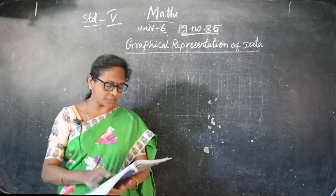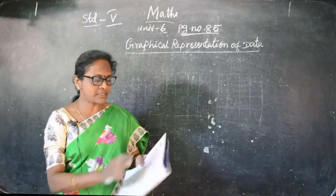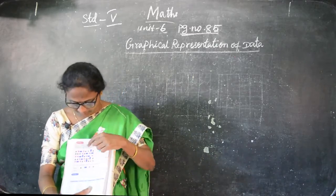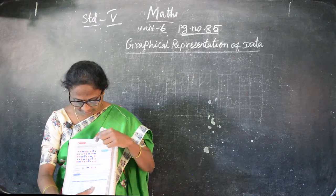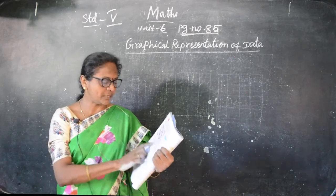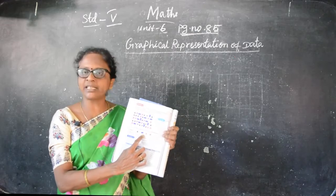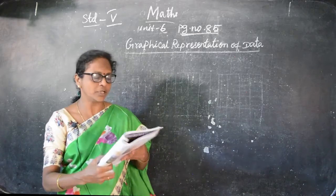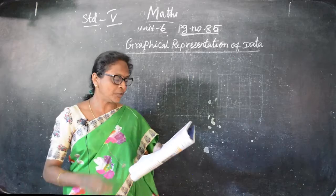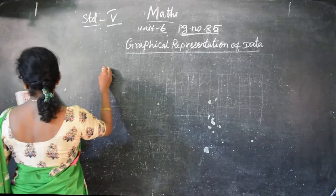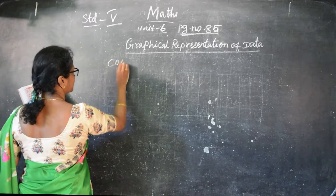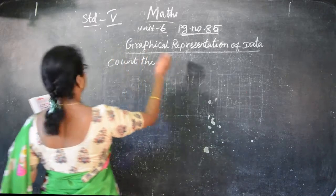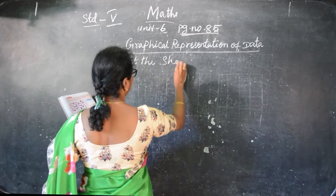Here, in this place, they are given the triangle, circle, rectangle, triangle, circle, rectangle and square. So you have to find out how many triangles are there, how many rectangles are there, how many squares are there and how many circles are there. So you can find out - count the shapes. They will give the graph like this and you have to count and write how many.